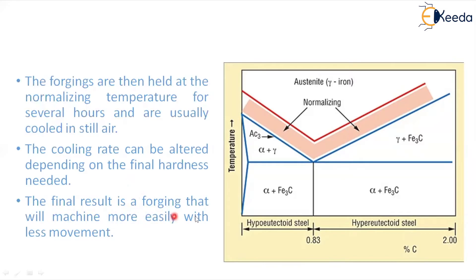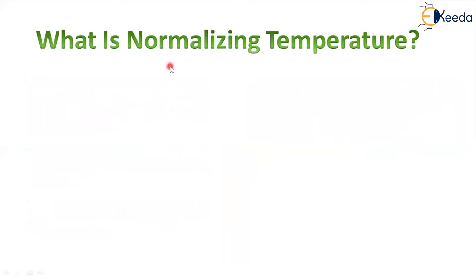The final result of this normalizing process is that the forging material will machine more easily with less effort. When machinability increases, we can do a lot of processes on the surface of the material, which is very important in industrial applications. That is why we adapt normalizing even though annealing is already available.